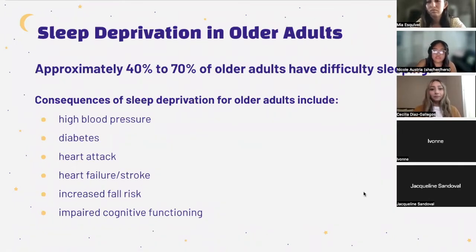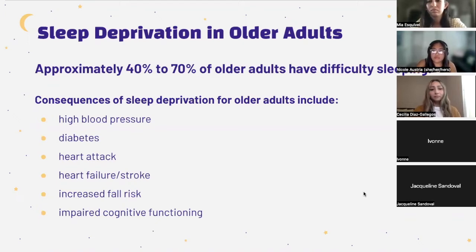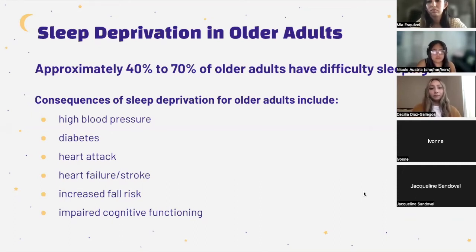As people age, the body secretes less melatonin, which is normally produced in response to darkness and helps promote sleep by coordinating the circadian rhythm. Because a lack of sleep can lead to many chronic diseases, older adults are at risk for high blood pressure, diabetes, cardiovascular issues, increased fall risk, and impaired cognitive functioning. It's extremely important to address these risks and improve one's sleep hygiene routine in order to improve their lifestyle.